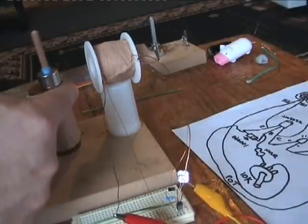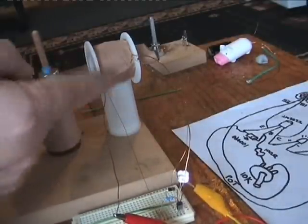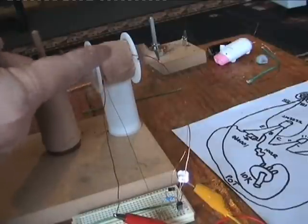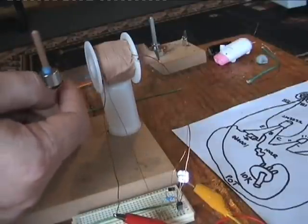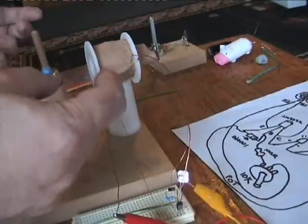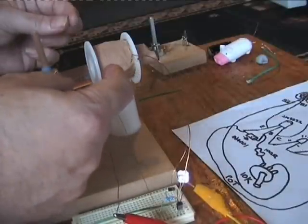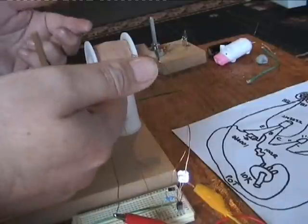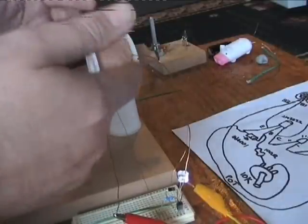Now as this magnet passes by the coil, it produces a current in the coil. That current has a magnetic field at right angles, which produces current in the next strand of coil and on and on and on.